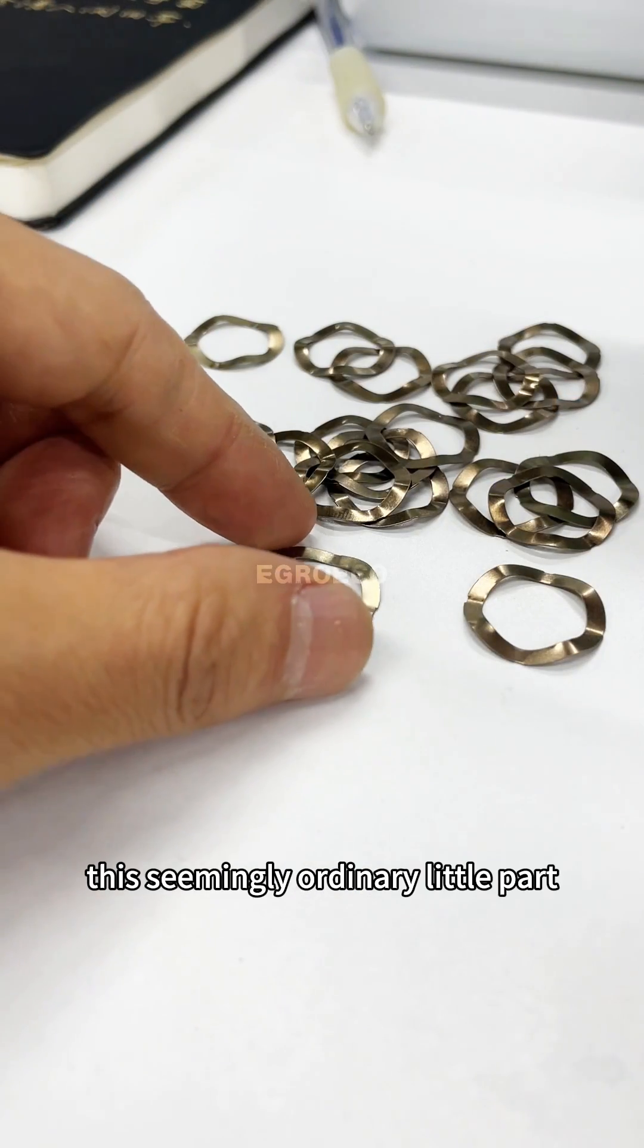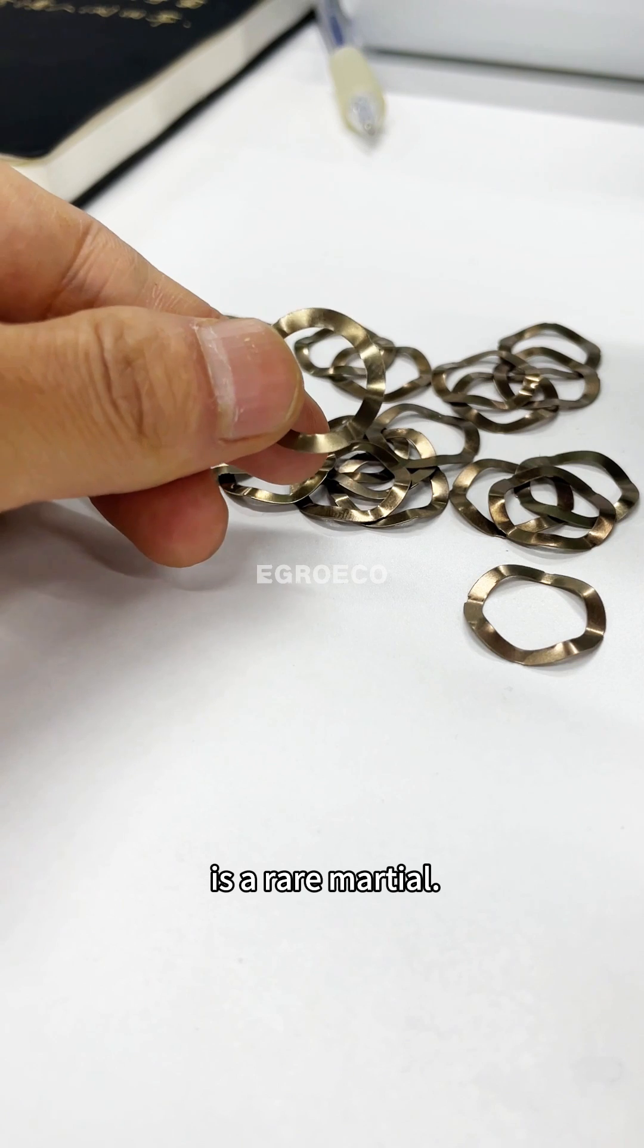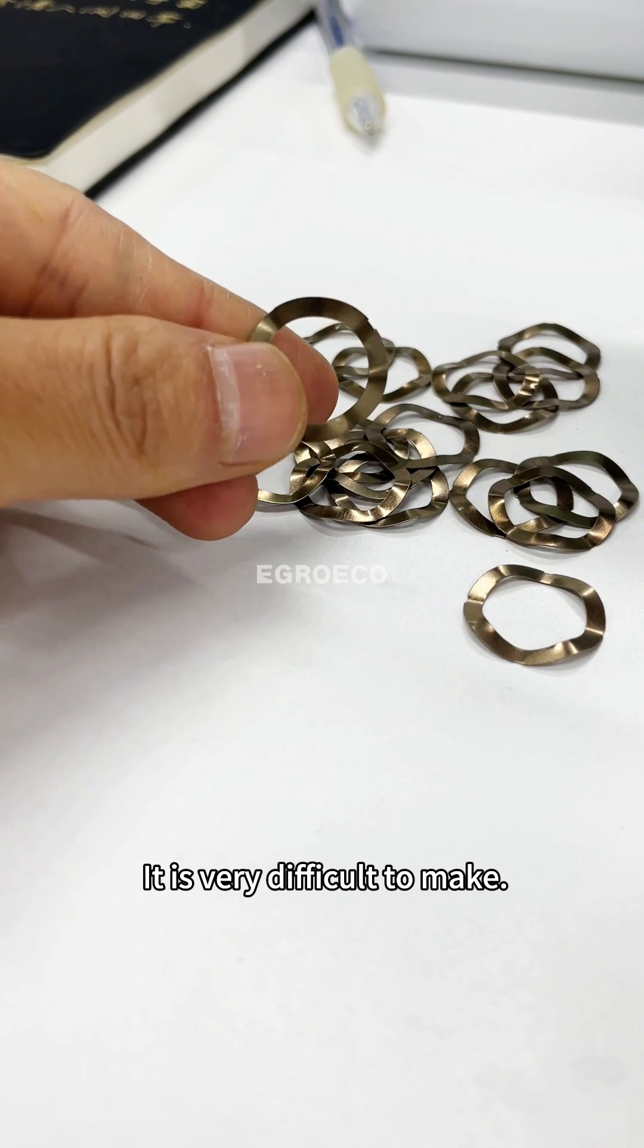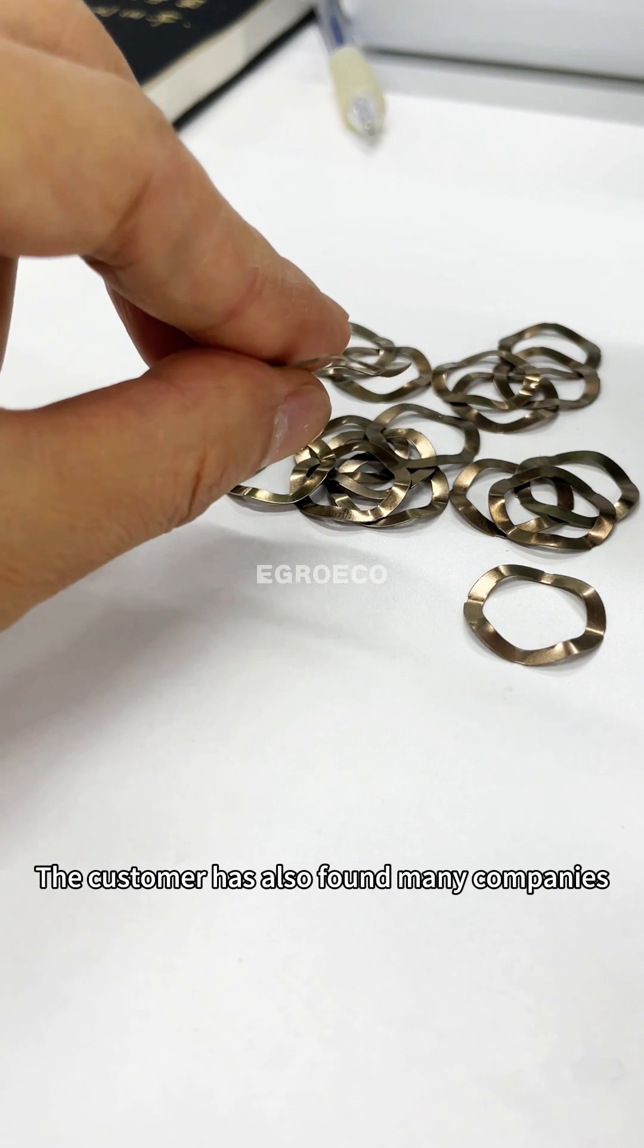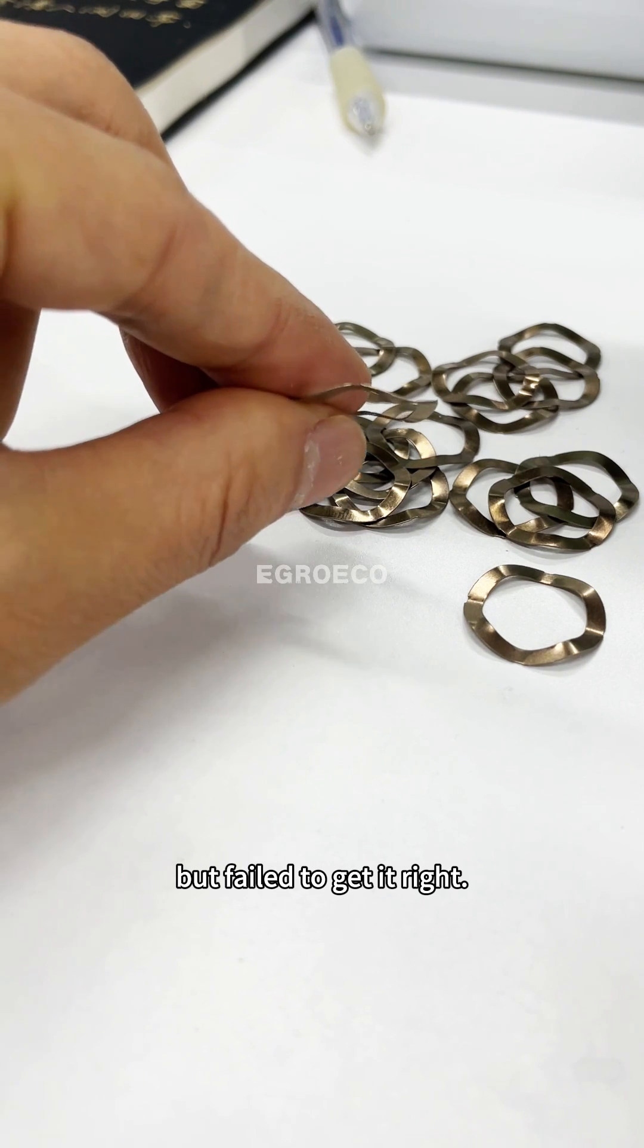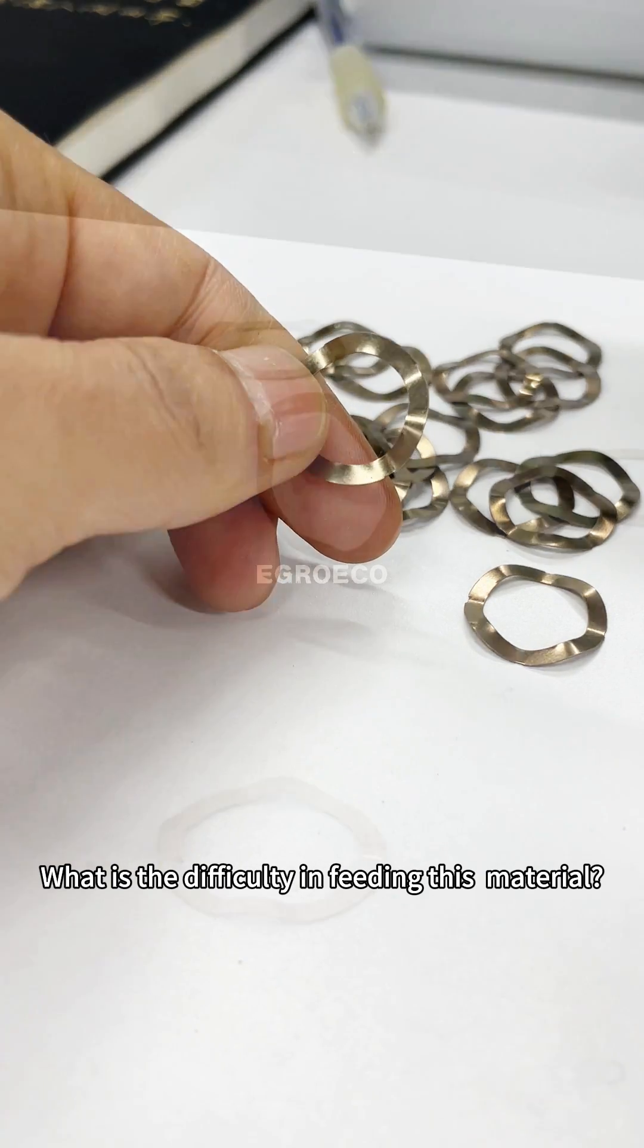For example, this seemingly ordinary little part is a rare Marshall. It's very difficult to make. The customer has found many companies but failed to get it right. What is the difficulty in feeding this material?